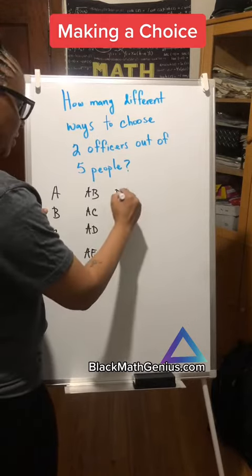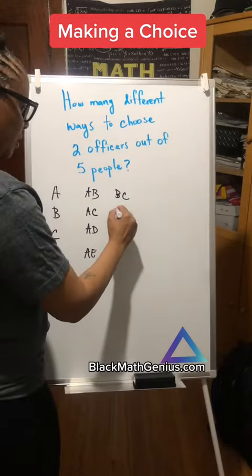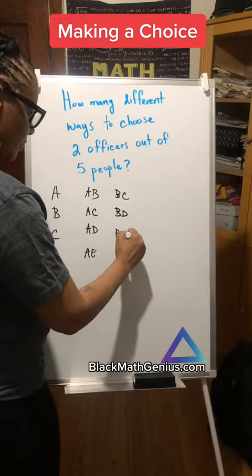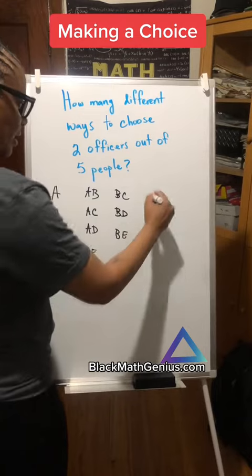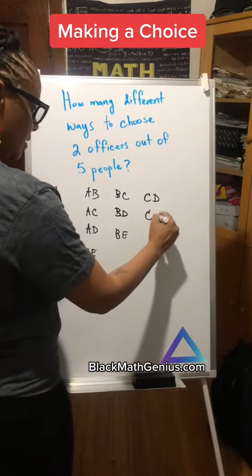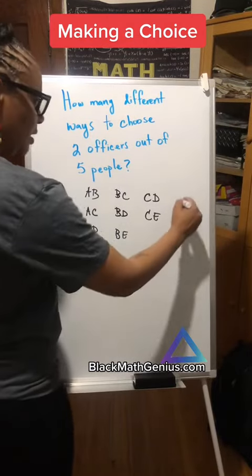And next we have BC. Notice how I'm writing mine down. BD, BE. And then I go down to C. And we have CD, CE. And then I go down to D, DE.